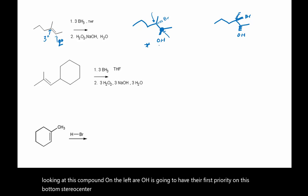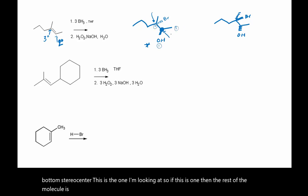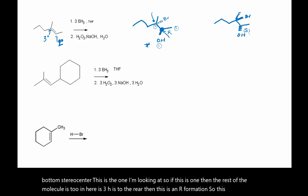So if this is one, then the rest of the molecule is two and here is three. H is to the rear, then this is an R configuration. So this is going to be an S over here.